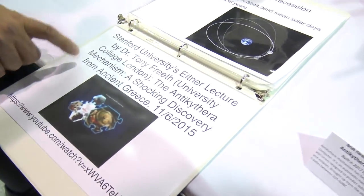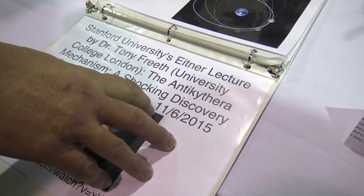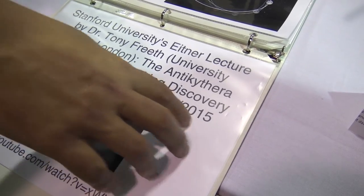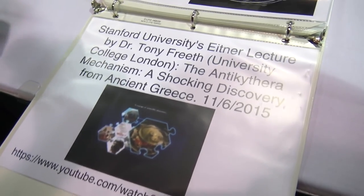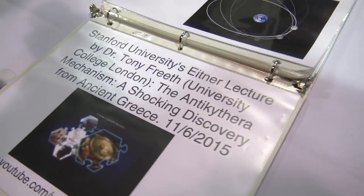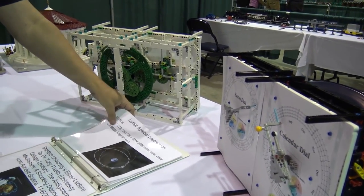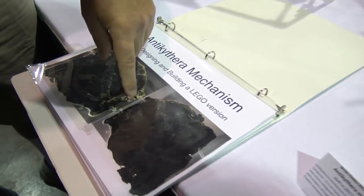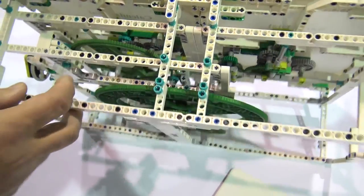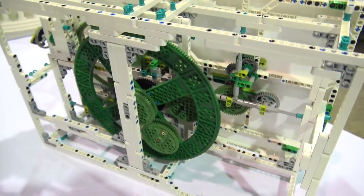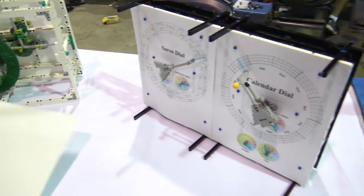I highly recommend a talk by Dr. Freeth. This research was published in 2015 and I'm right up to the latest work on it, building it in Lego. It's green because it's supposed to represent corroded bronze, so I used lots of green Lego gears - some fairly rare parts - but what the hell. It's a fascinating project with so much detail and research.